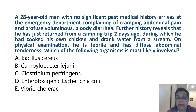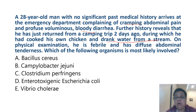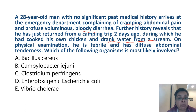Let's move on to the next question. A 28-year-old man with no significant past medical history arrives at the emergency department complaining of crampy abdominal pain and profuse voluminous bloody diarrhea. Further history reveals that he has just returned from a camping trip two days ago during which he cooked his own chicken and drank water from a stream. On physical examination, he is febrile and has diffuse abdominal tenderness. Which organism is most likely involved? Again, it is an invasive diarrhea — abdominal cramps with fever and bloody diarrhea.